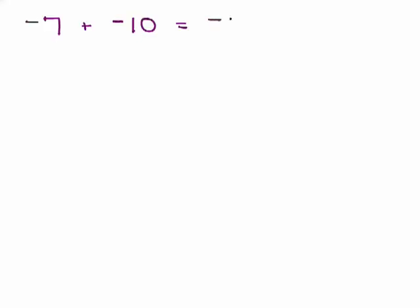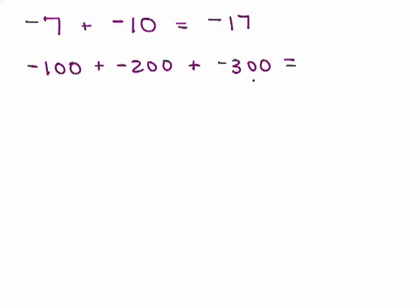How about negative 100 plus negative 200 plus negative 300? I certainly wouldn't want to write out 100 negative signs, 200 more, and 300 more, but as long as you can picture in your head what's going on you should be all right. You're adding up a bunch of negatives, so you know the answer's going to be negative. I've got 100, 200 more, 300 more — just add 100, 200, and 300 to get negative 600.